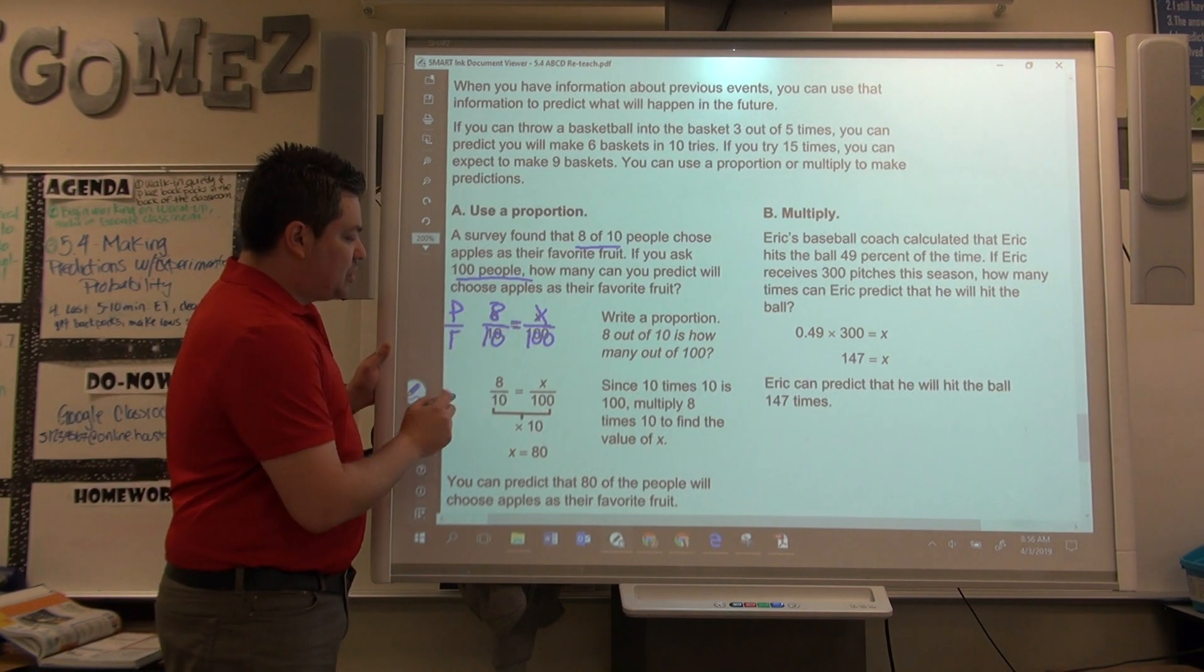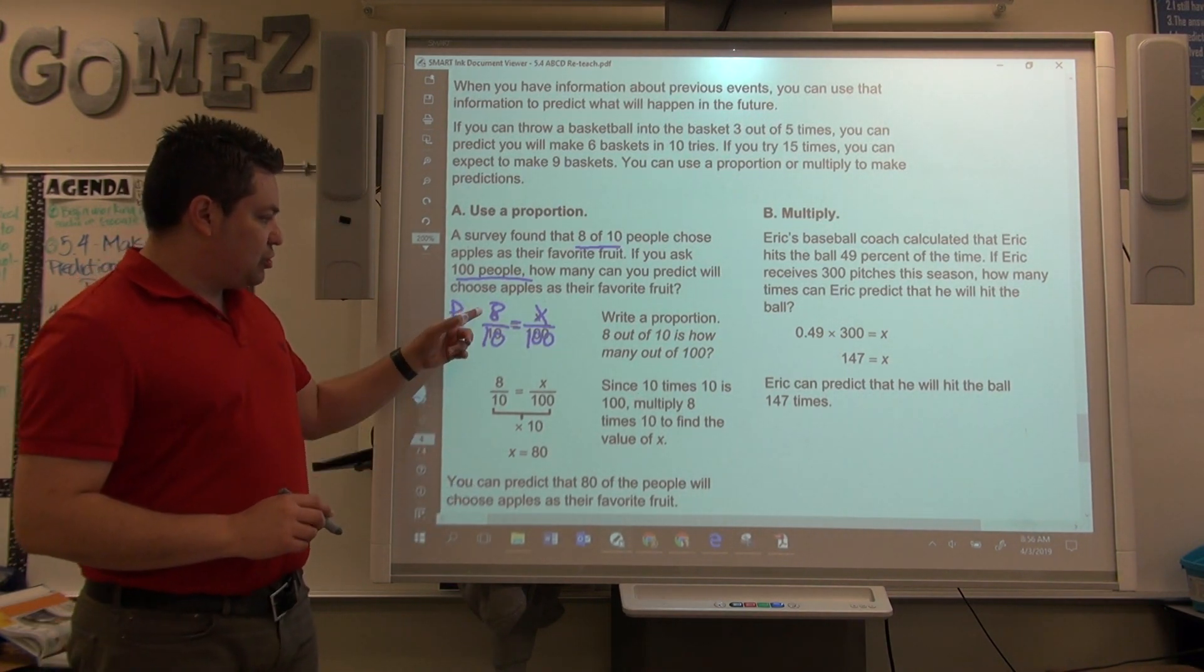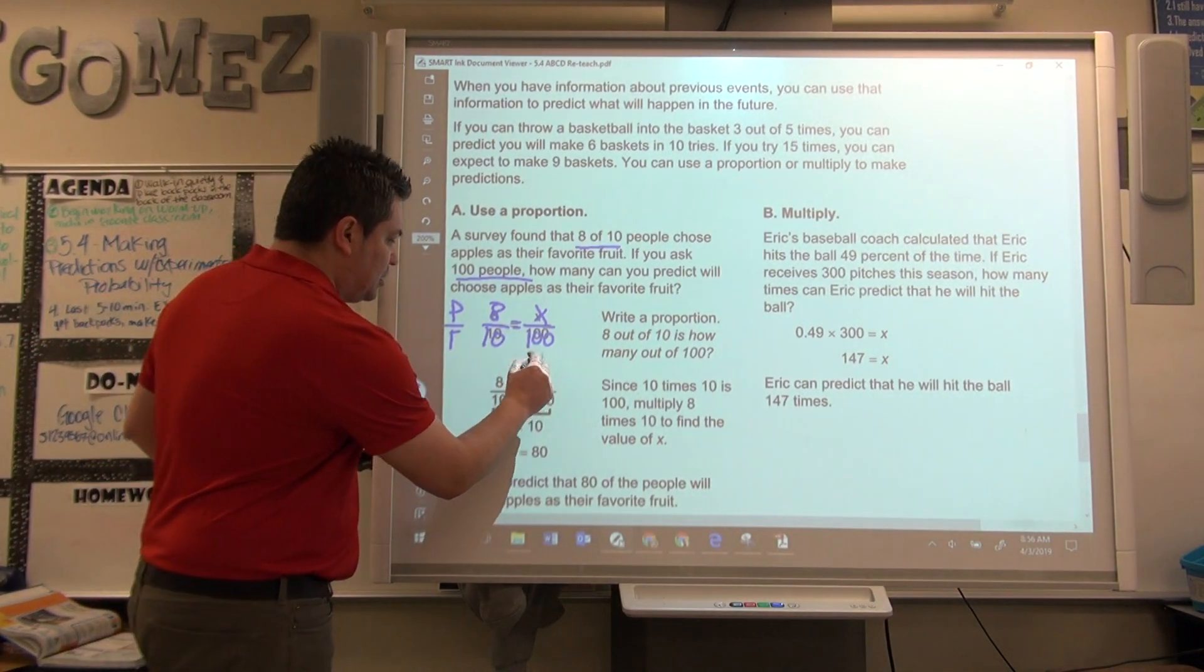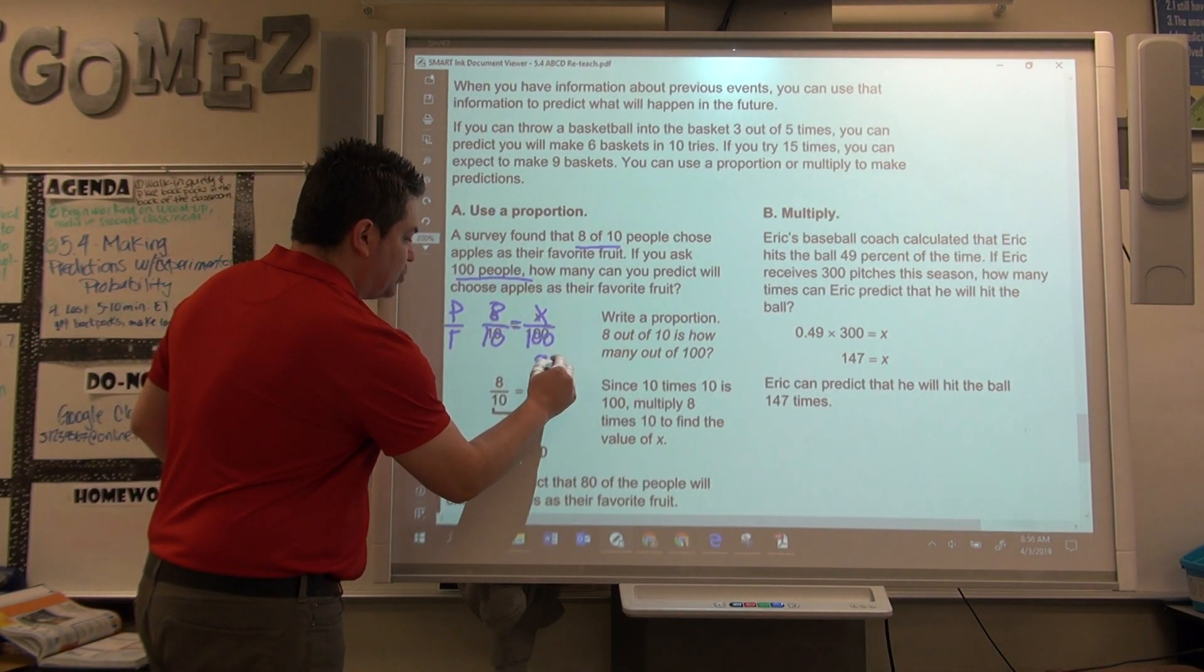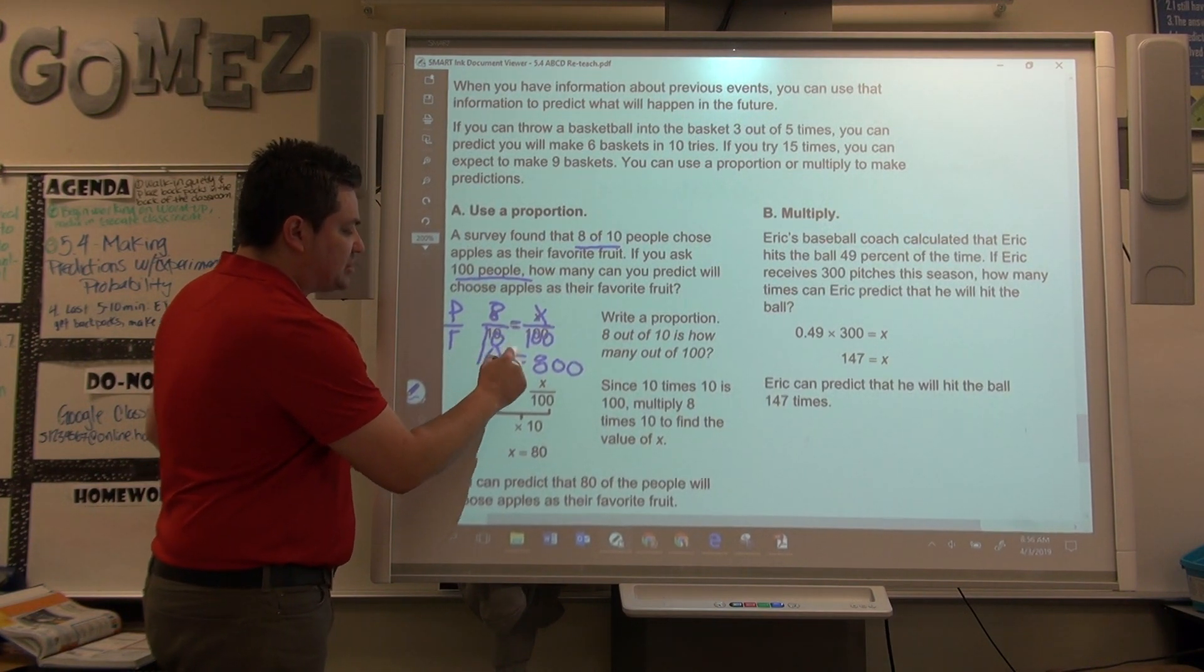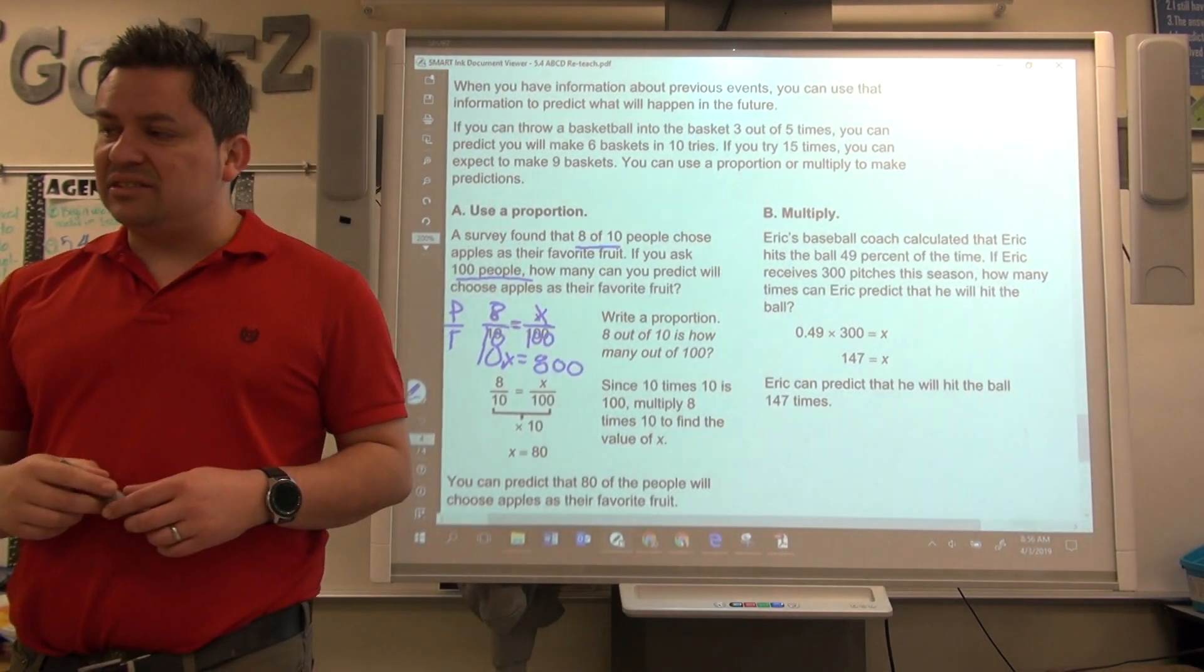So, you will have, you can look at this. Right here, you can do eight times a hundred, which is eight hundred, equals to ten times x is ten x. Sorry, ten times x is ten x.